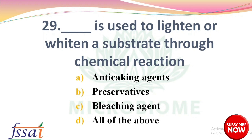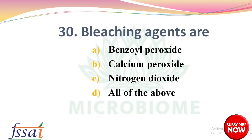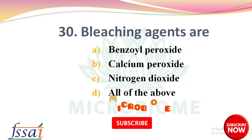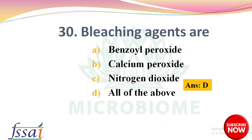The right answer is option C, bleaching agent. Next, bleaching agents are — options: benzoyl peroxide, calcium peroxide, nitrogen dioxide, all of the above. The right answer is option D, all of the above — benzoyl peroxide, calcium peroxide, and nitrogen dioxide.